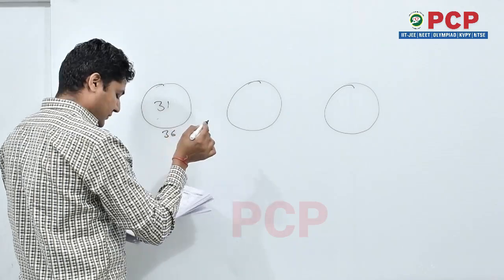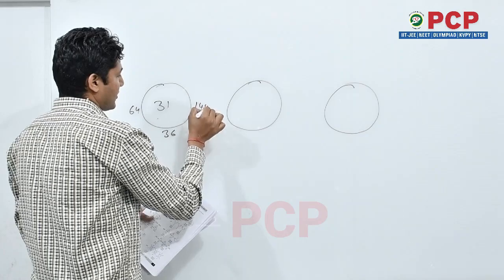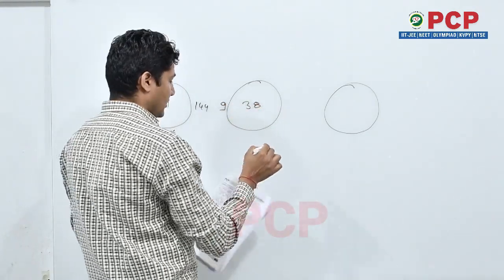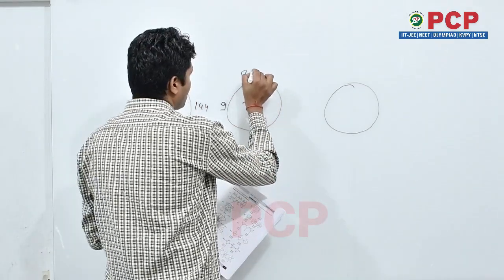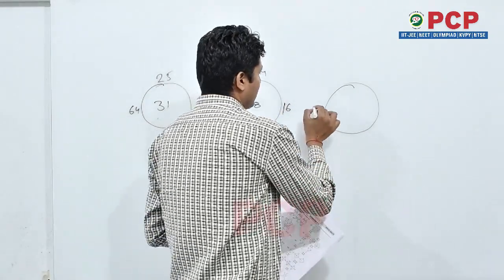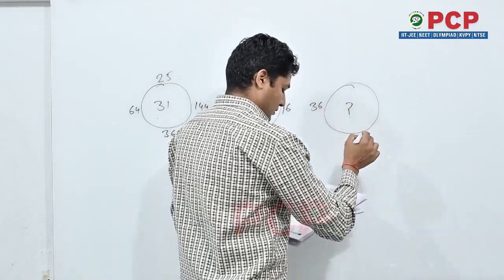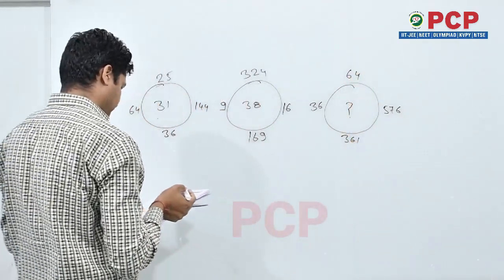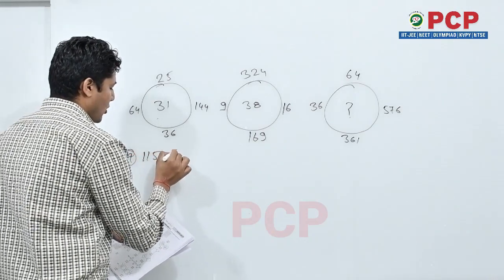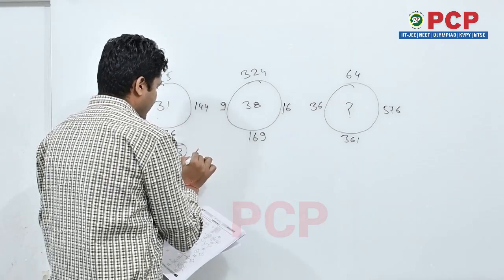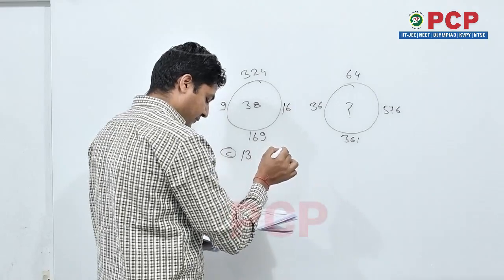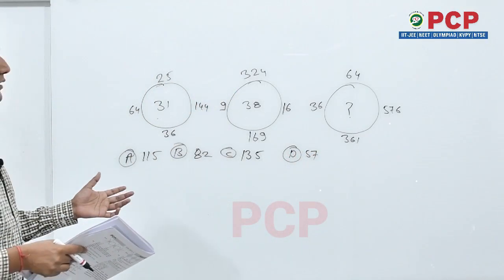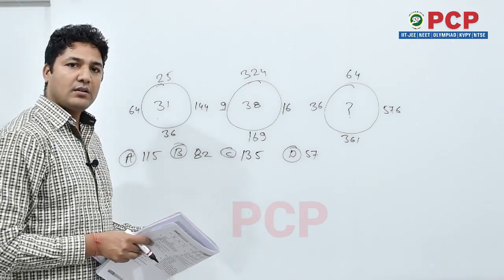Next question. 31, 36, 64, 144, 25, 9, 38, 169, 324, 16, 36, question mark, 361, 576, 64. Option A 115, option B 82, option C 135, option D 57. See the question very carefully, that is most easiest question if you know about the square.